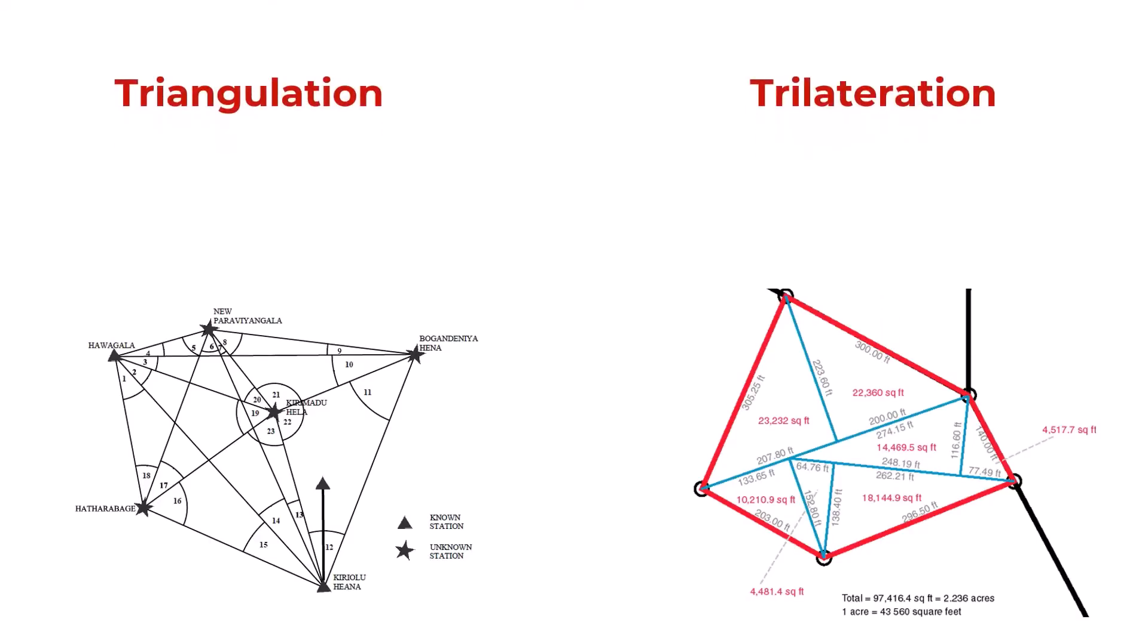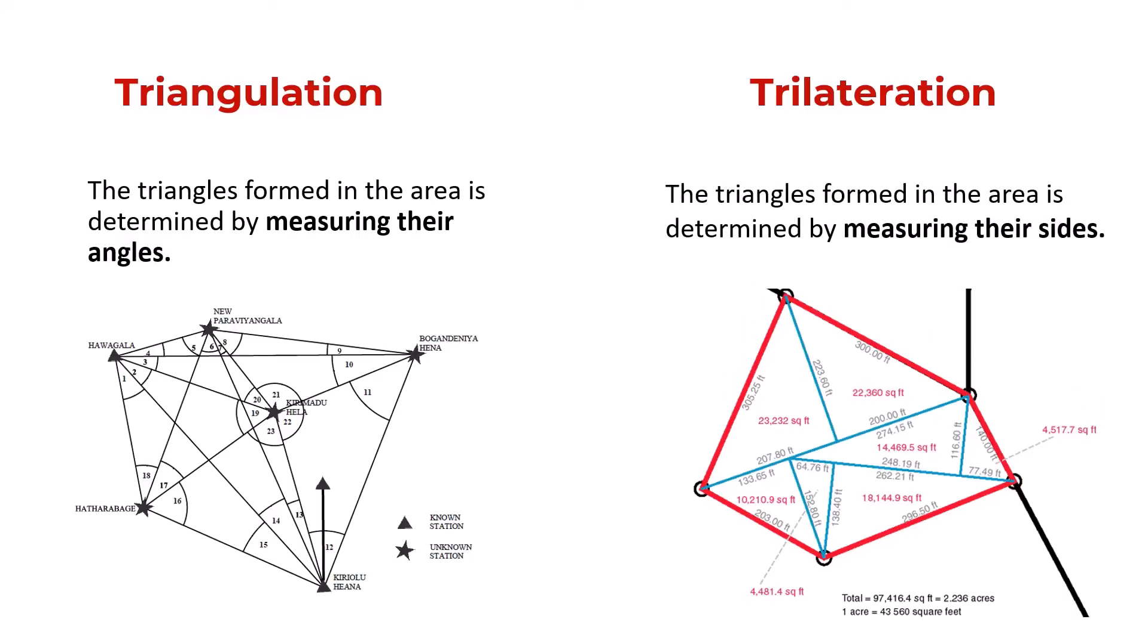Triangulation and trilateration. In triangulation, the triangles formed in the area are determined by measuring their angles, while in trilateration, the triangles formed in the area are determined by measuring their sides.